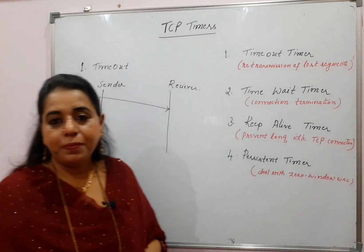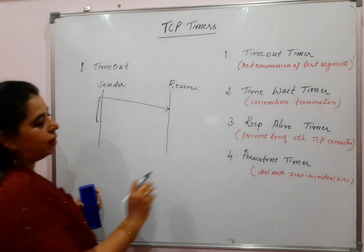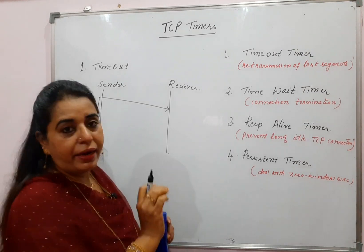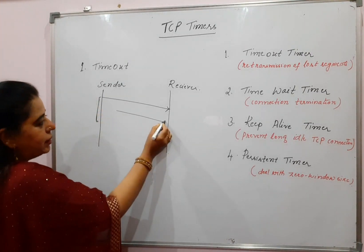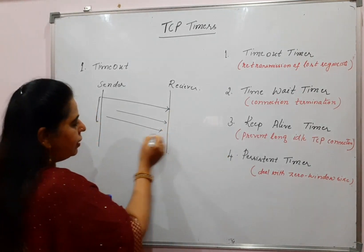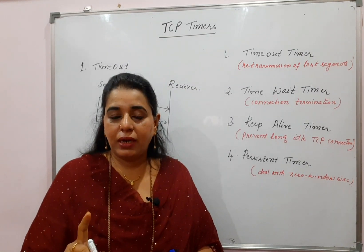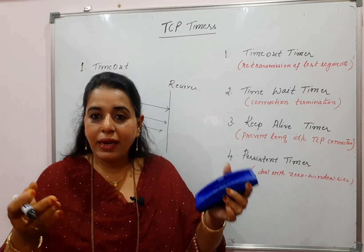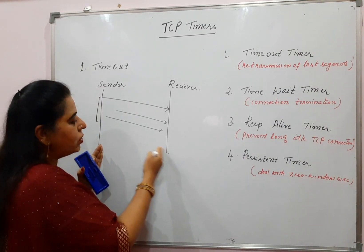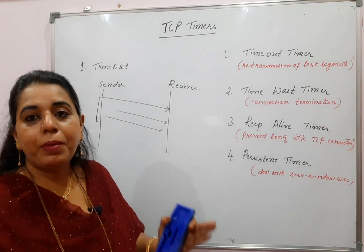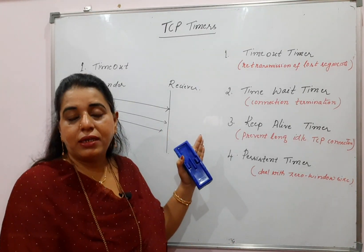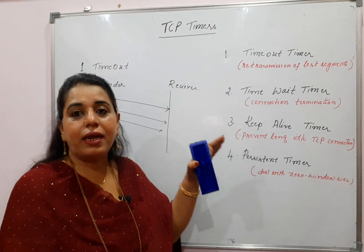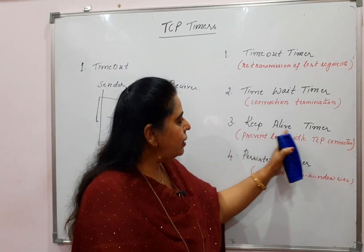The third one is the keep alive timer. Why is this keep alive timer used? It is for preventing long idle TCP connections. The sender has sent segments and the receiver is also responding, but the sender has not initiated connection termination — it has not sent any FIN segment, nor is it sending any data. The connection is idle. The connection is established, but the sender is not sending any data nor terminating the connection. The server needs to close the connection, but how long can it wait for segments from the client side? For that purpose, this keep alive timer is used.